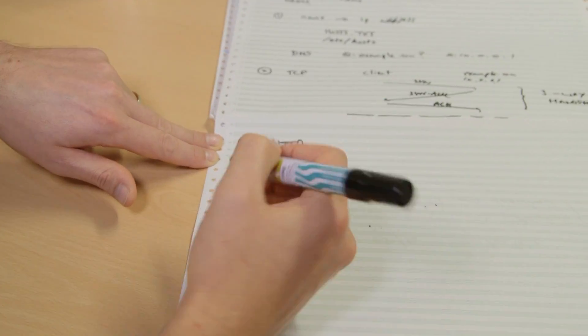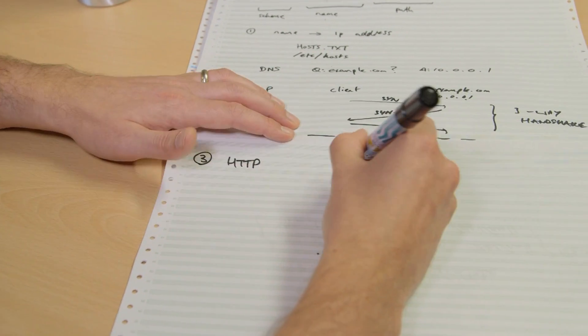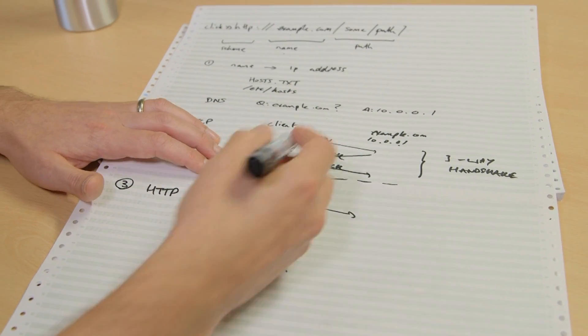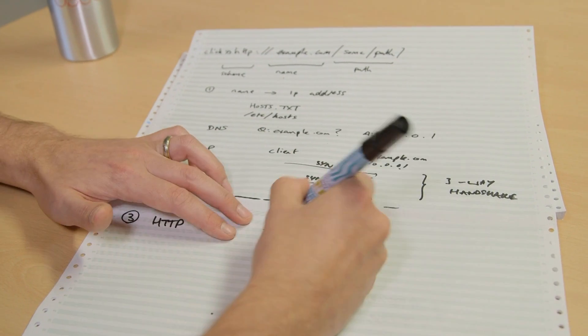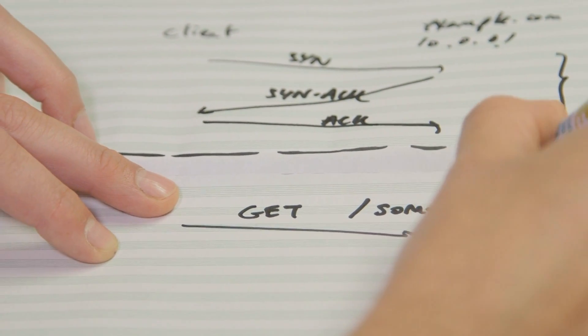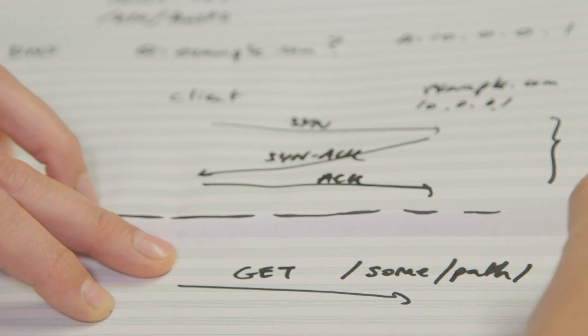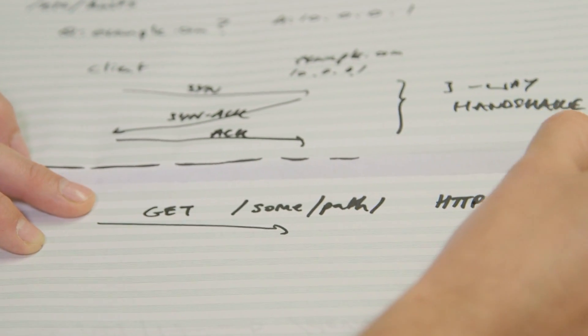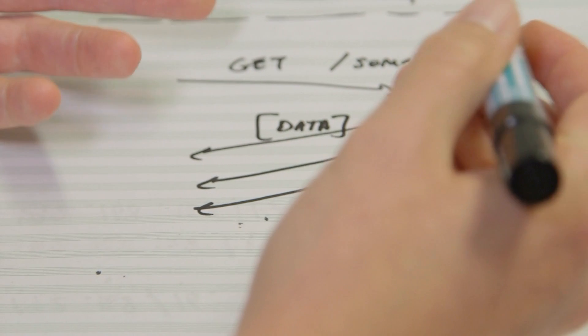Then you actually send an HTTP command over this connection to example.com using TCP. In that packet — let's say it's the old version HTTP 1.0 — there will be a command something like: GET /some-path HTTP/1.0, followed by two newlines. That's the HTTP command that gets sent across the connection to the server, which can then respond with whatever data is associated — so that might be a web page, for example.